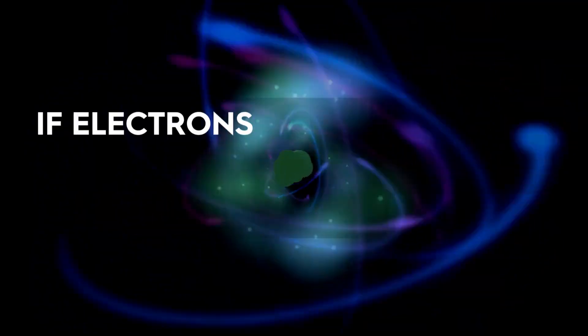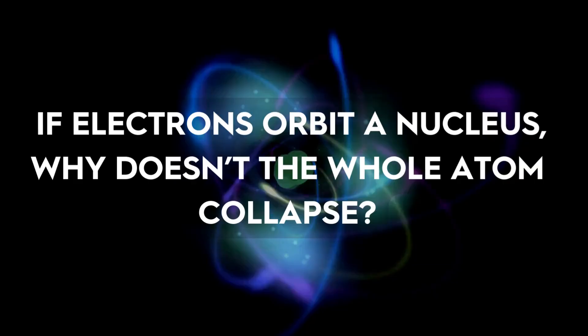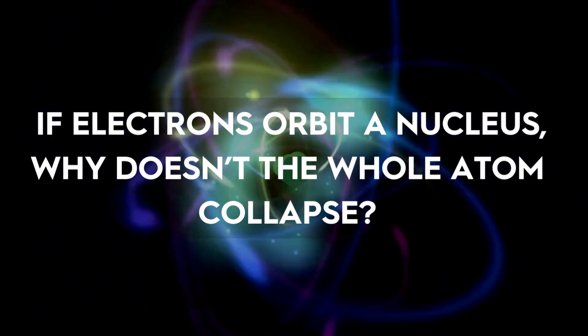Because the next riddle is a big one. If electrons orbit a nucleus, why doesn't the whole atom collapse? Let's see how physics answered.